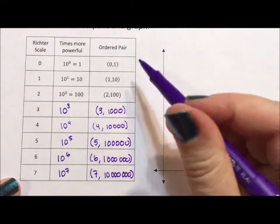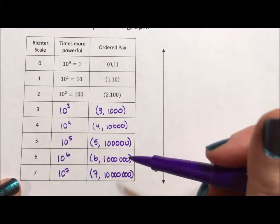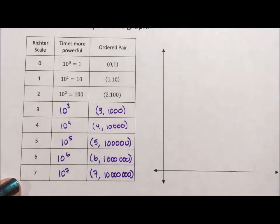All right, so my goal is to graph this logically on a single grid. So we have 1, 2, 3, 4, 5, 6, 7.